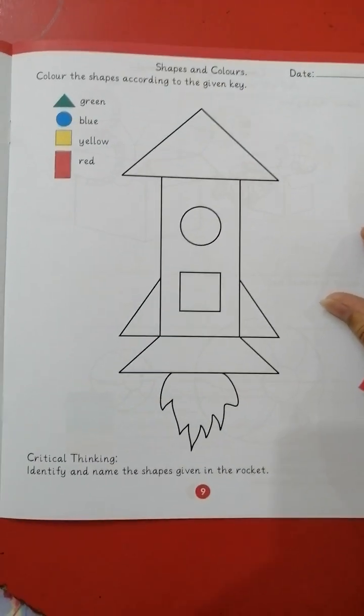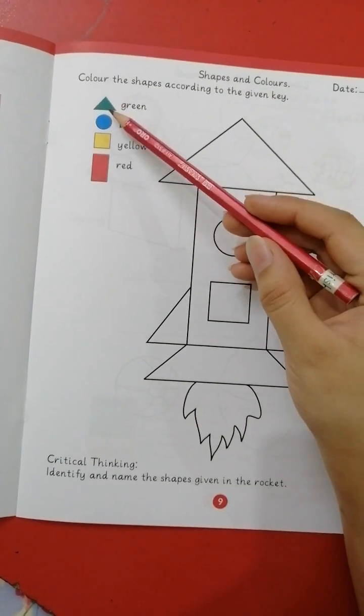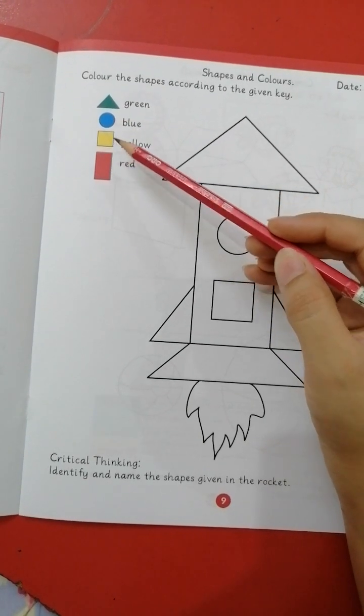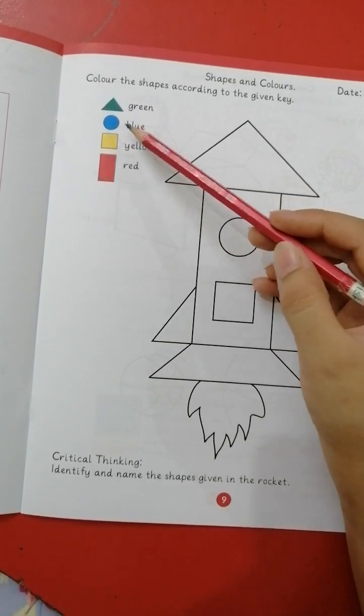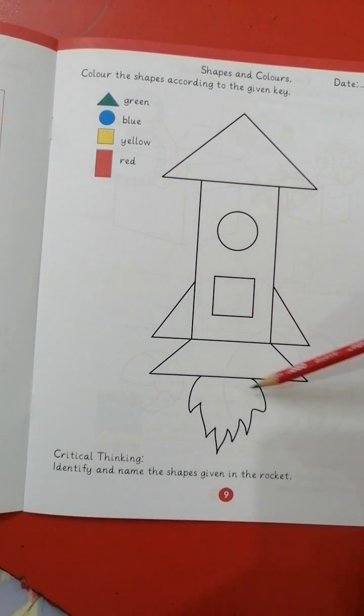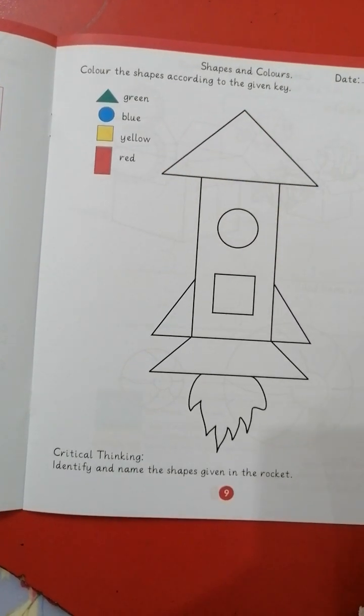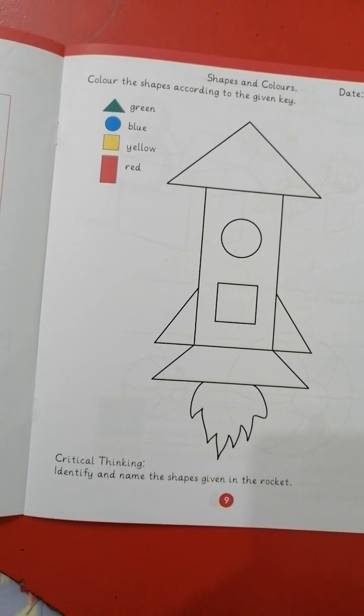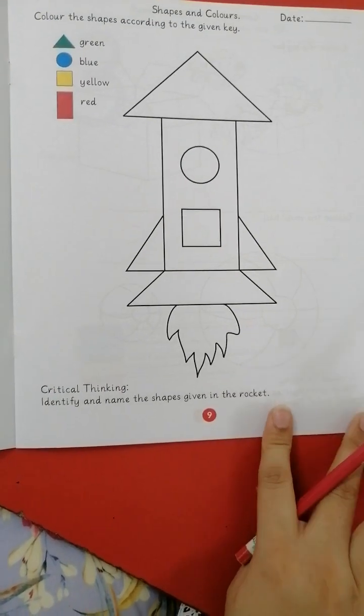Shapes and colors. Color the shapes according to the given key. You have these keys: triangle, circle, square, rectangle. Green, blue, yellow, red. You have to find these shapes and color according to these keys given over here. Then identify and name the shapes given in the rocket. This is your oral work.